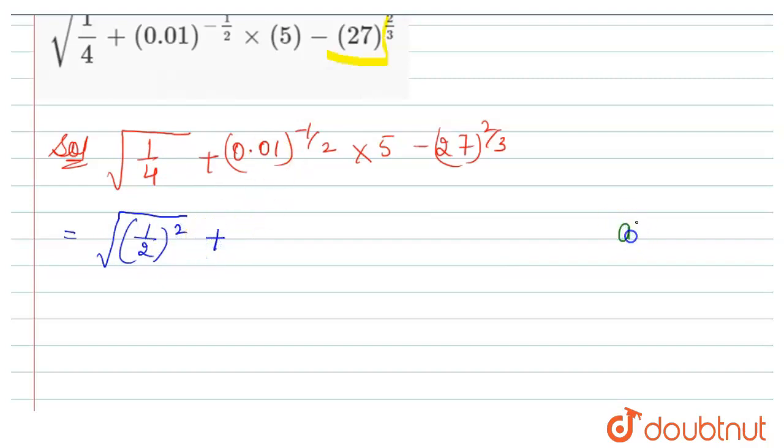We know that if a raised to power minus n, then we can write it as 1 divided by a raised to power n. Or we can write it as 1 by a raised to power n, because 1 raised to power n is 1. So here it is power 1 by 2.